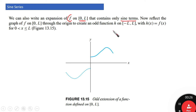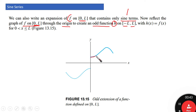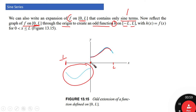Instead of cosine as mentioned in the previous video, we'll use sine terms only here. We reflect the graph of f on this interval through the origin to create an odd function h on the interval from minus L to L. If this function can be reflected through the origin, this means it's an odd function, and we can make an expansion for this function using sine series.